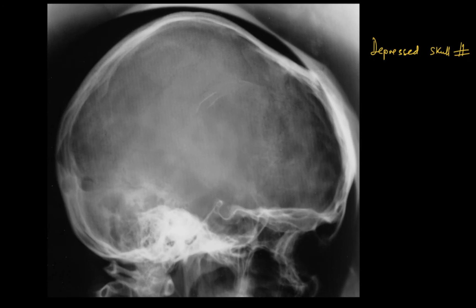This is again depicted in this skull radiograph where there is a depressed skull fracture. The skull vault is perpendicular to the beam until you get a depressed skull fracture, and the inner and outer table are then tangential to the beam, just as they are here. There's the inner table and there's the outer table.